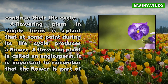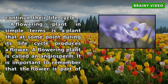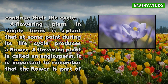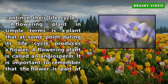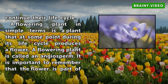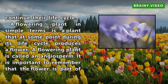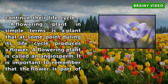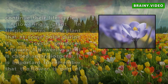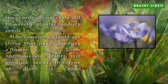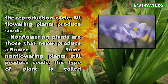A flowering plant, in simple terms, is a plant that at some point during its life cycle produces a flower. A flowering plant is called an angiosperm. It is important to remember that the flower is part of the reproduction cycle. All flowering plants produce seeds.